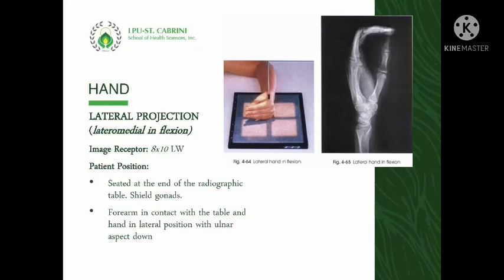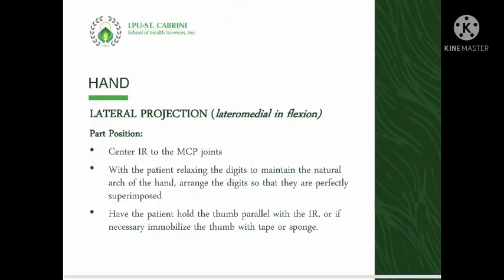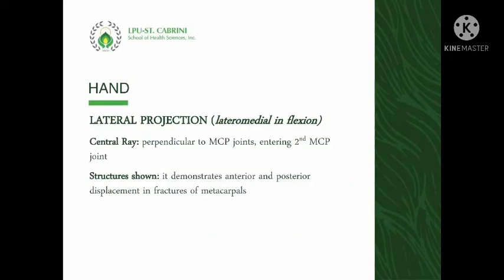Another modification of the hand lateral projection is the lateral-medial inflection. The forearm is placed in contact with the image receptor and the hand is in lateral position with the ulnar aspect down. With the patient relaxing the digits to maintain the natural arc of the hand, arrange the digits so they are perfectly superimposed, and have the patient hold the thumb parallel with the IR, or if necessary, immobilize the thumb with tape or sponge. The metacarpal phalangeal joints should be centered on the image receptor, and the central ray is perpendicularly directed to the second metacarpal phalangeal joint. The lateral-medial inflection demonstrates anterior and posterior displacement in fractures of metacarpals.